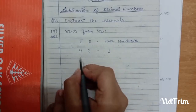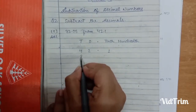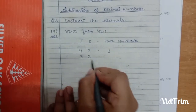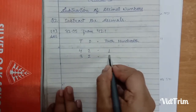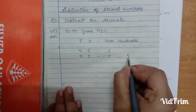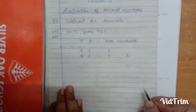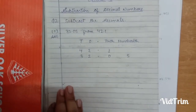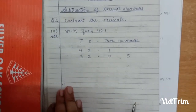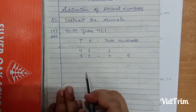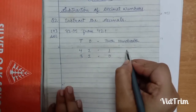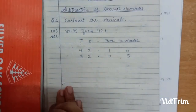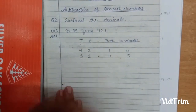Next we have 32.05. So 3 is on the tens place, 2 is on the ones, decimal under decimal, 0 is on the tenths place and 5 is on the hundredths place. Now for making them like decimals, we put a zero on the empty place. The empty place is on the hundredths place of 42.1, so we put zero there and now we do the subtraction.